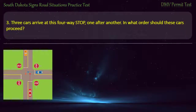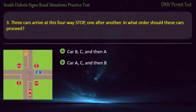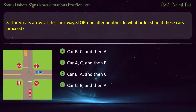Question 3: Three cars arrive at this four-way stop, one after another. In what order should these cars proceed? Options: Car B, C, and then A; Car A, C, and then B; Car B, A, and then C; Car C, B, and then A. Answer: Car B, A, and then C.